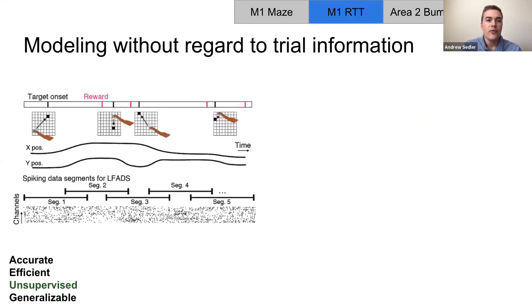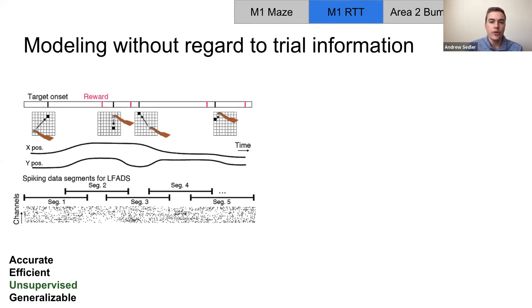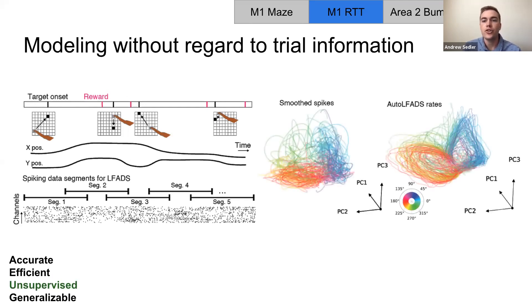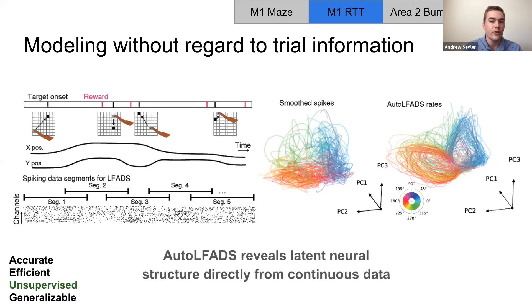Normally the input samples for LFADS are entire trials, but they don't necessarily need to be. Because the random target task was self-paced, the trials had various lengths ranging from one second to almost four seconds. Rather than using whole trials as input samples for auto LFADS, we generated samples by chopping the continuous data into fixed length overlapping segments without regard for trial boundaries. After training, we reassembled the rates and reduced dimensionality to the first three principal components. We colored the neural trajectories by reach angle to show that auto LFADS discovered trajectories containing information about reach direction, despite having no information about the notion of a trial during training. This shows that auto LFADS requires virtually no knowledge outside of neural data to infer meaningful representations.